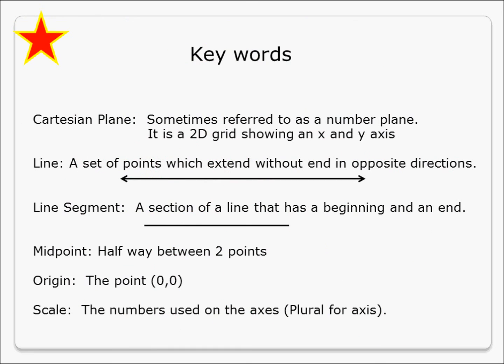A couple of key words that you need to remember for this topic. Firstly, a Cartesian plane. Occasionally it will be referred to as a number plane. It's just the 2D grid that we are drawing up with our X and Y axis. A line is a set of points which extends without an end in opposite direction. So a line has an arrow head on each end. A line segment is a part of that line, and it has a beginning and it has an end. Midpoint, halfway between two points. The origin is the position zero, zero. And the scale is the numbers that we use on the axis.